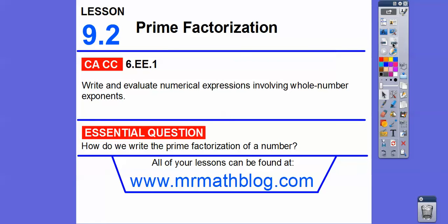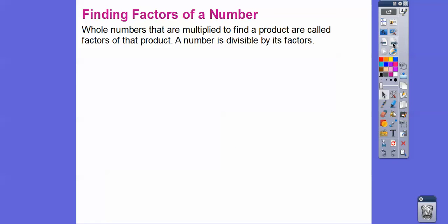We're going to show you a couple of different methods. One of them you might have done before — factor trees. Do you guys remember factor trees? We'll talk about that. And there's another one called the ladder diagram. We'll talk about that to get the prime factorization.